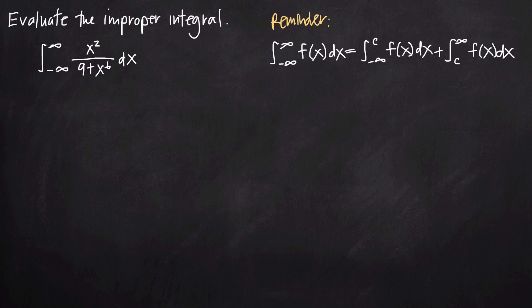In this video, we're going to be talking about how to evaluate improper integrals. In this particular problem, we've been asked to evaluate the integral of x squared over the quantity 9 plus x to the sixth power over the interval negative infinity to positive infinity.